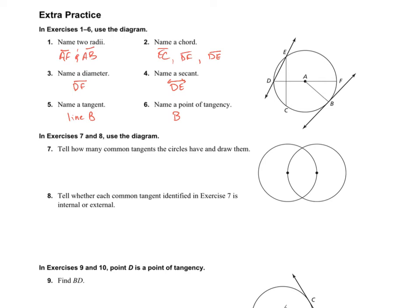For number seven, tell how many common tangents the circles have and draw them. So let's take a look. We've got, I can make a common tangent like right there. That's one. I can make a common tangent like that. And that's pretty much it. There's no other common tangents that I could draw to these two circles. So two. Tell whether each common tangent in exercise 7 is, so these would be external tangents because they don't cross within.